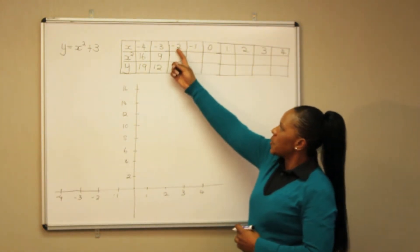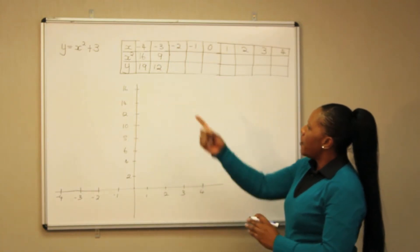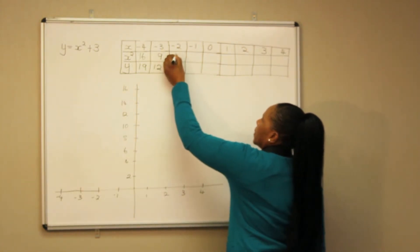Minus 2 squared we get 4, 4 plus 3 we get 7.